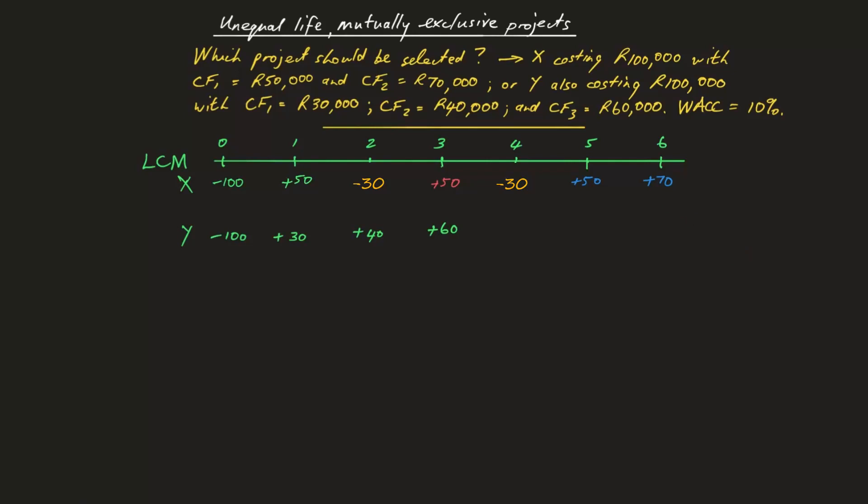For Project Y, there is only one replacement point in the six-year horizon. The principles are the same as before, paying attention to the combination cash flow at T3, and the fact that there is no new Project Y cost at T6.